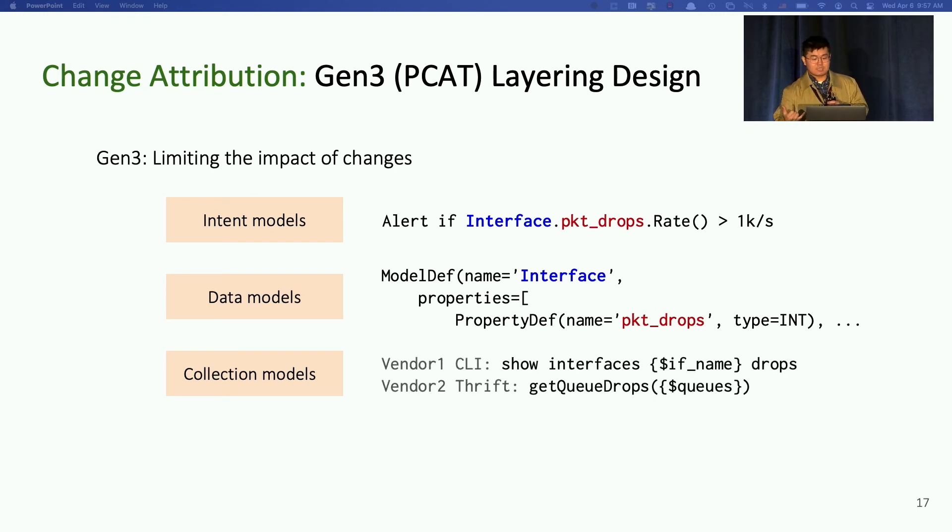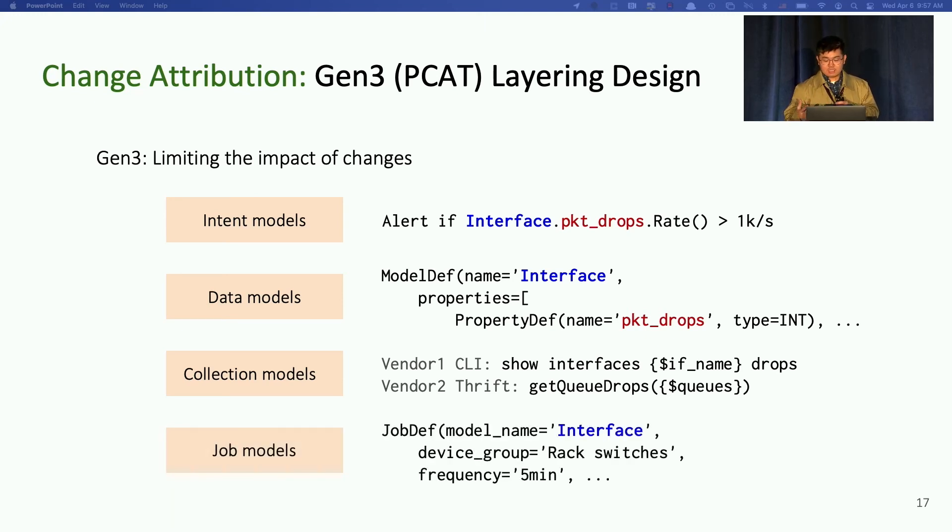Now, we separate the collection models, which specify how to collect from different vendors. Like here, the vendor one might use CLI, command line, while vendor two use gRPC. So creating this layer of collection models allow us to capture all the changes related to vendor format and APIs, which are quite common. Finally, we separate job models, which defines how frequently we collect, which group of devices to collect, et cetera. The job model captures the system aspect of changes. They are changed based on the performance or scalability requirement of collections independently from the internal job models.